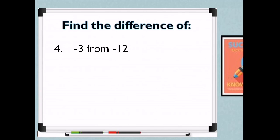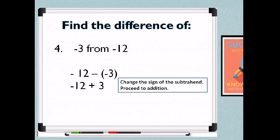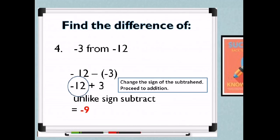Next, find the difference of negative 3 from negative 12: negative 12 minus negative 3. Change the sign of the subtrahend: negative 3 becomes positive 3, giving us negative 12 plus 3. Unlike signs: subtract and copy the sign of the higher absolute value. So 12 minus 3 is 9, and the sign is negative because negative 12 has the greater absolute value. Therefore, the answer is negative 9.